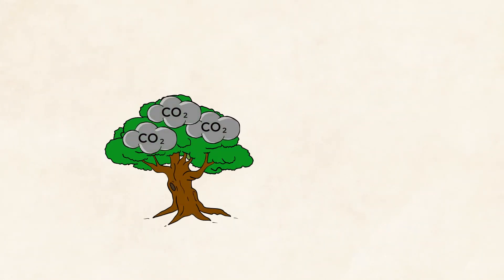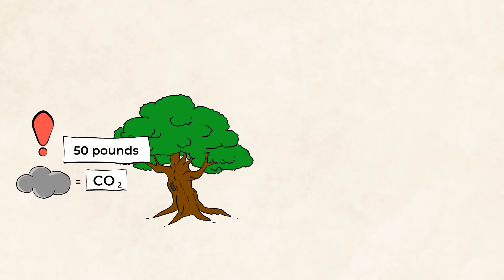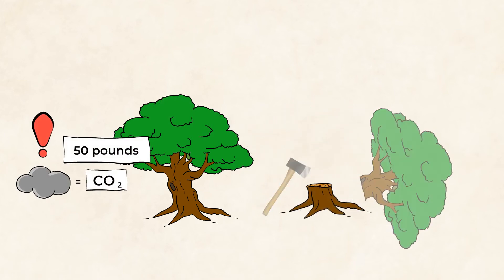Trees act like nature's sponge, and absorb all the carbon dioxide, or pollution, in our environment. On average, a tree absorbs 50 pounds of carbon dioxide each year. And as we cut them down, we lose their natural cooling effect.